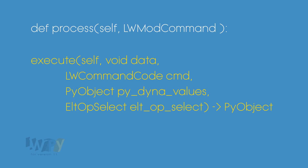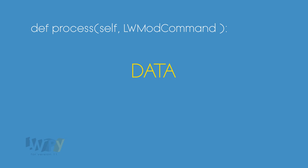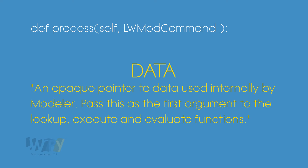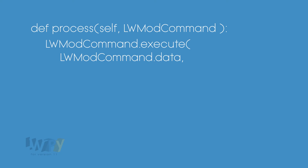Let's take this apart piece by piece, starting with the first argument we supply: data. The C++ SDK says this about data: an opaque pointer to data used internally by modeler. Pass this as the first argument to the lookup, execute, and evaluate functions. We are using the execute method, and data is the first argument we can supply to it. We do that with the dot data method of our variable that we supplied to the process method when we began.